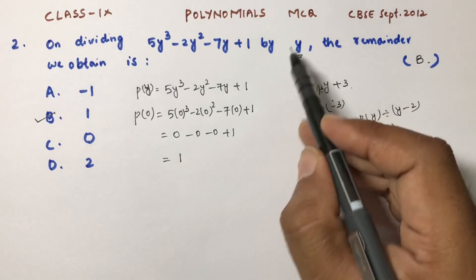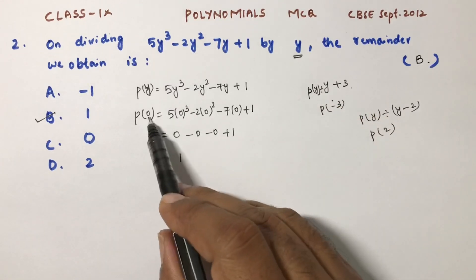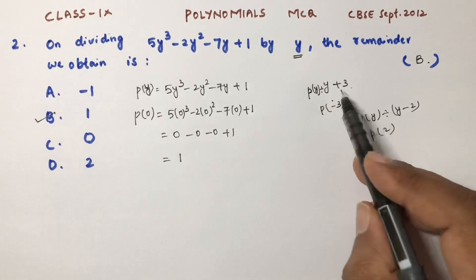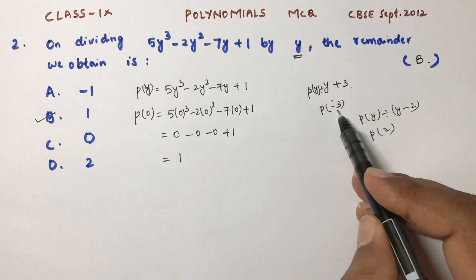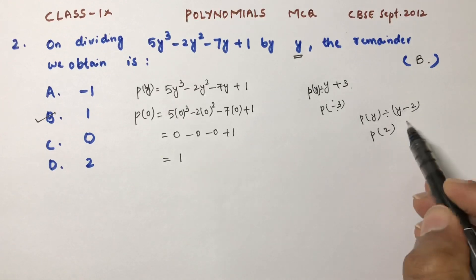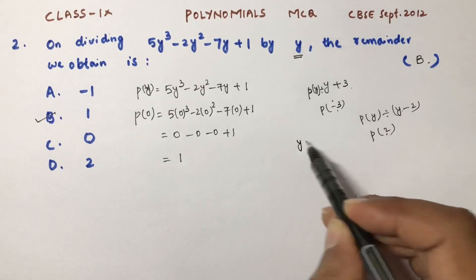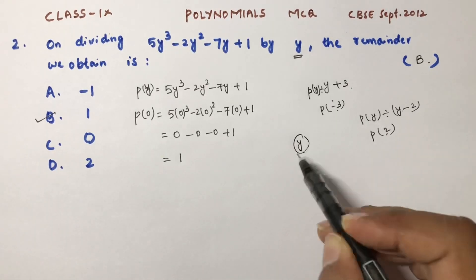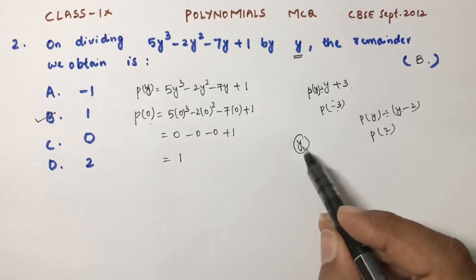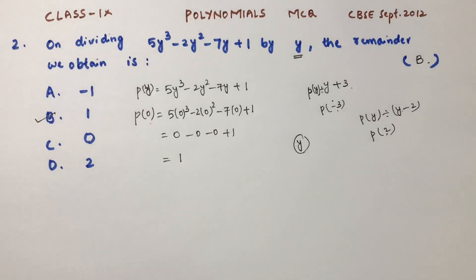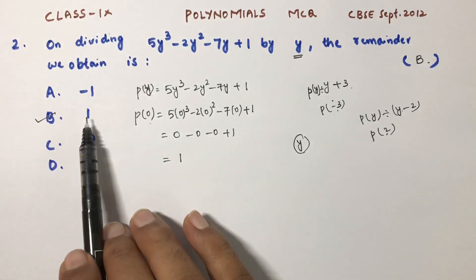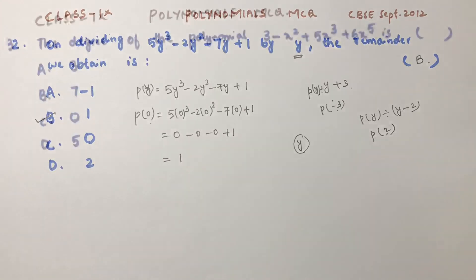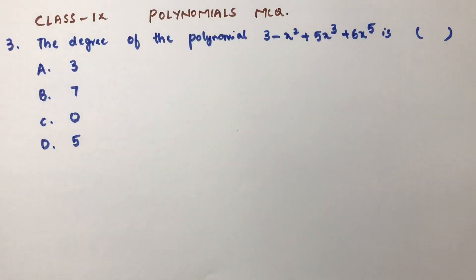So the rule is: if the divisor is (y + 3), substitute -3; if it is (y - something), substitute +something; if it is only y, substitute 0. The correct option is B, remainder = 1.